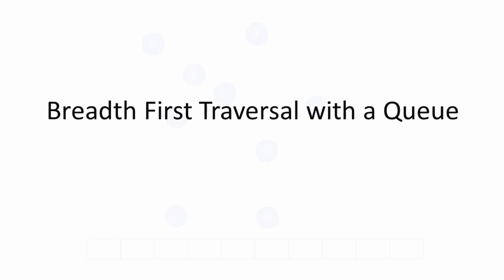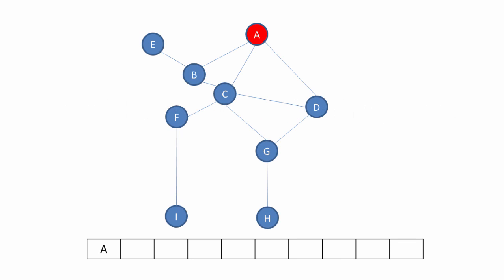Breadth first traversal can be managed using a queue data structure. We visit the first vertex and then we visit all of the adjacent vertices, enqueuing each one as we go. Once we've visited all of the unvisited vertices adjacent to the first vertex, we dequeue the first vertex. We then examine the one at the front of the queue to see if there are any more unvisited adjacent vertices. In this case, B has one, so we visit E and we enqueue it.